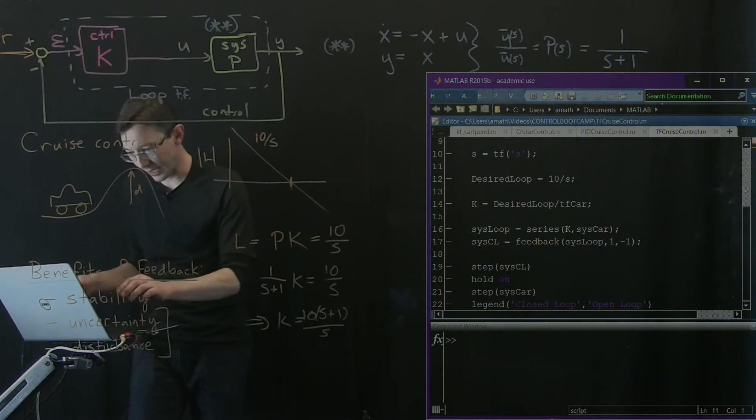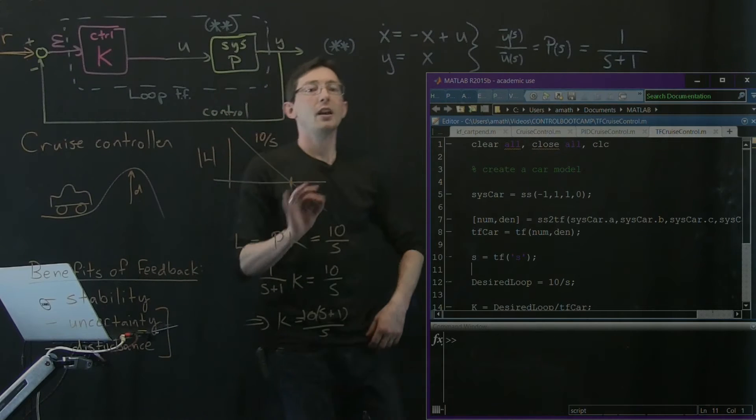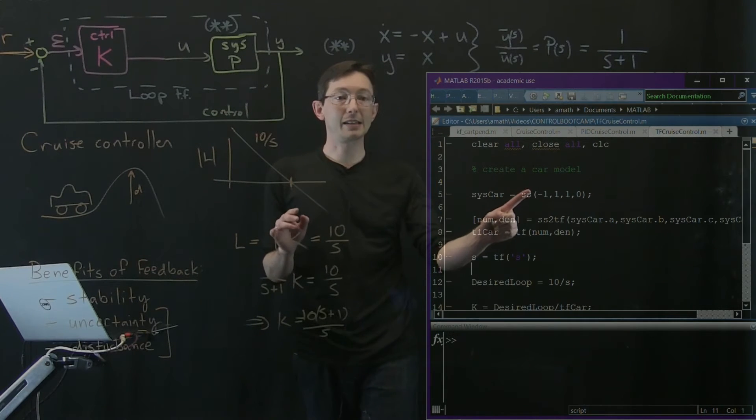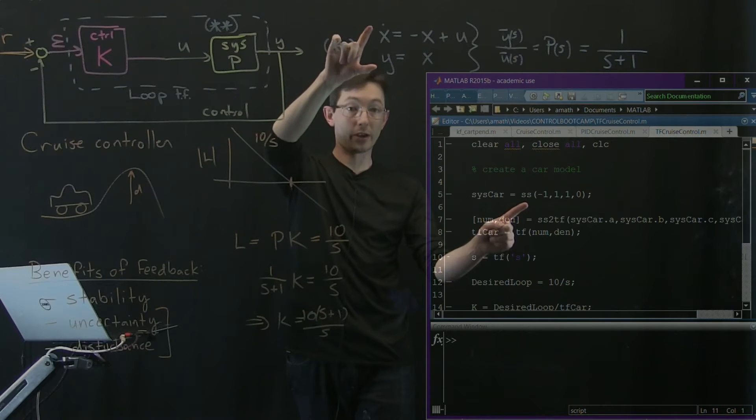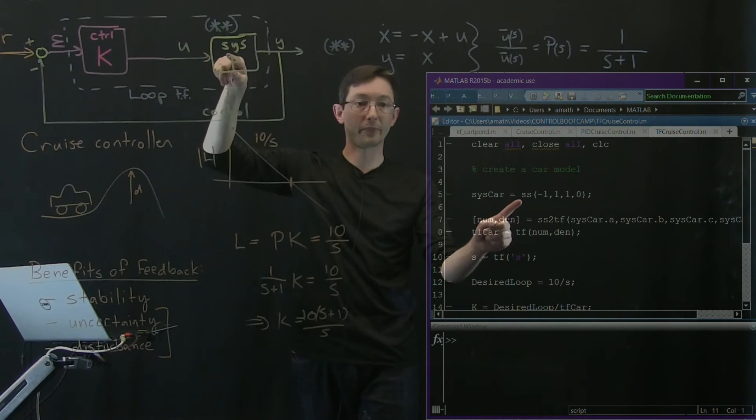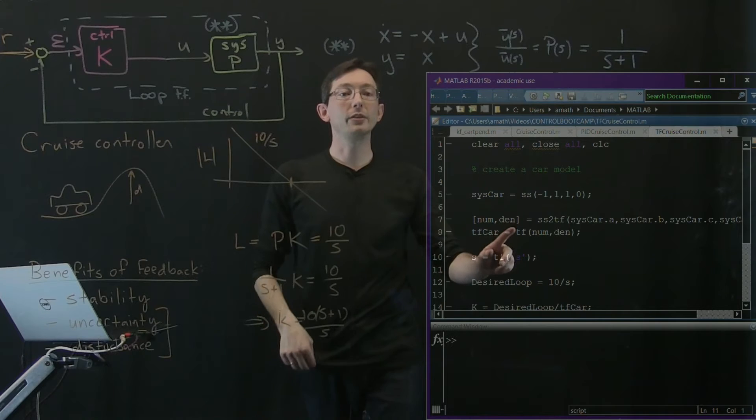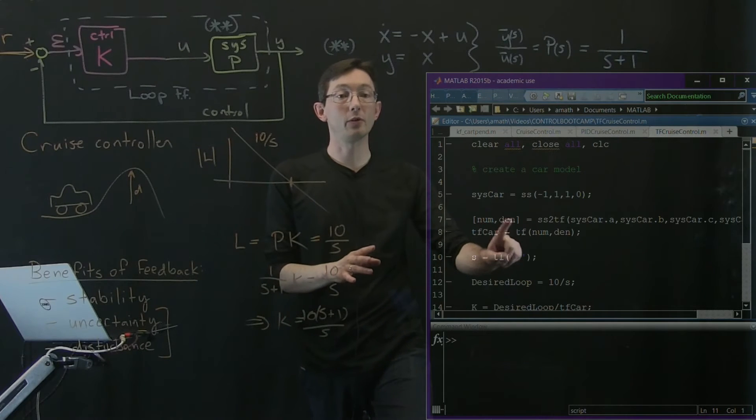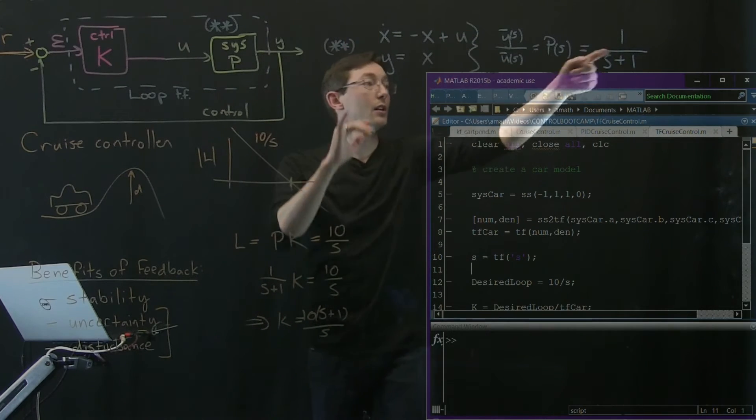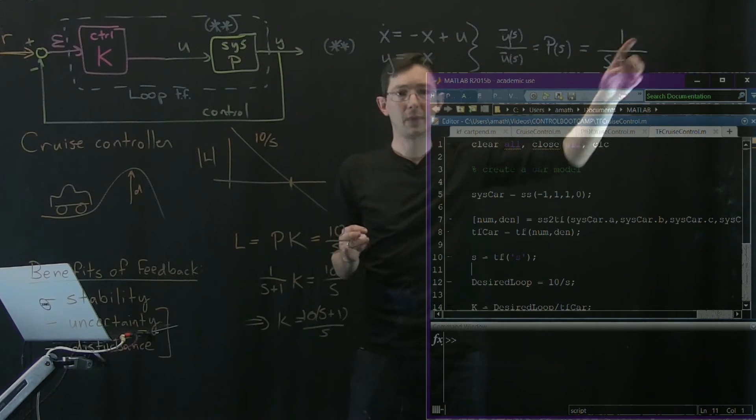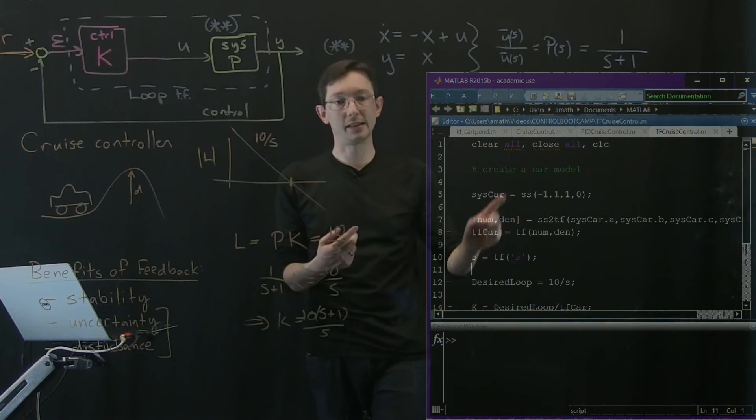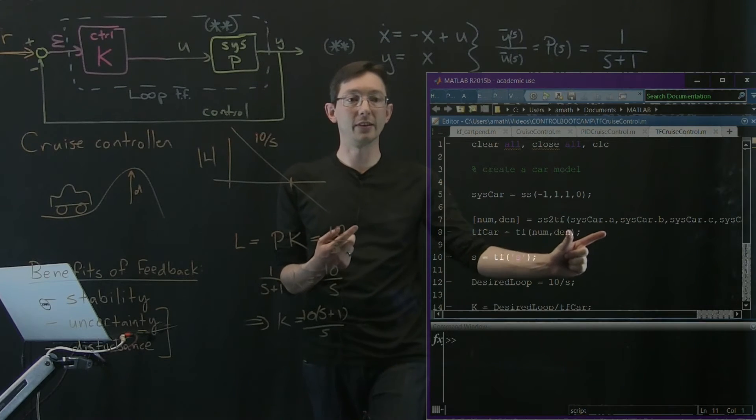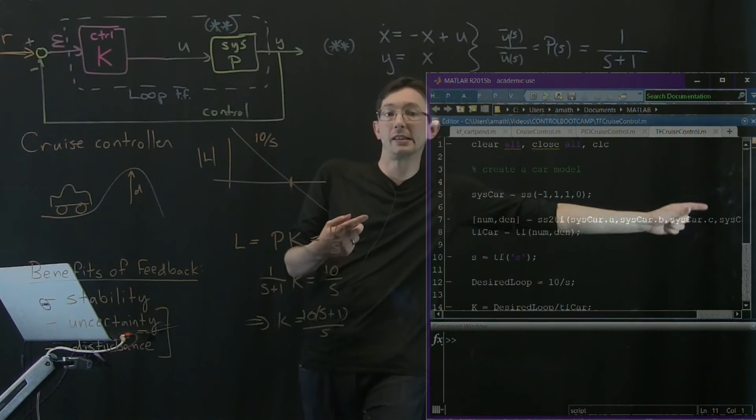So I have my MATLAB system. And here I'm going to have the exact same car system that I had before. It's literally just a state space model for the car, for just p, the plant. And what I'm going to first of all do is I'm going to transform it into a transfer function - going from state space to a transfer function. Now you can do it using this ss2tf command, state space to transfer function, where I give it the A matrix, B matrix, C matrix, and D matrix. And it gives me the numerator and denominator.